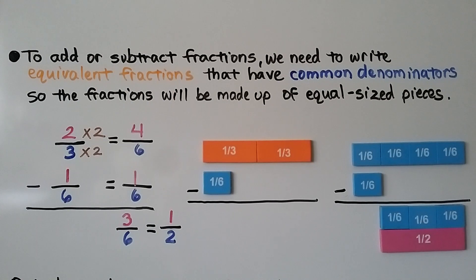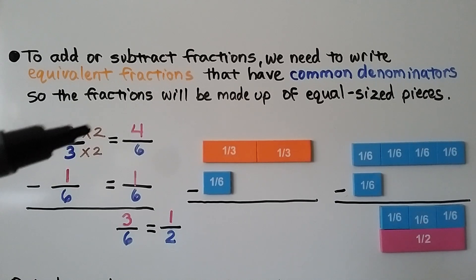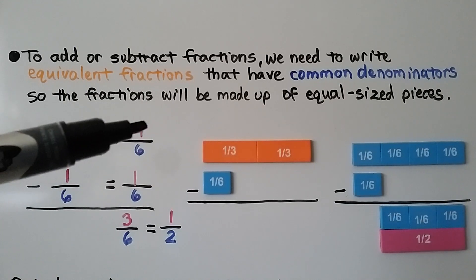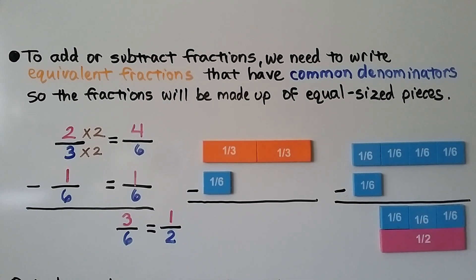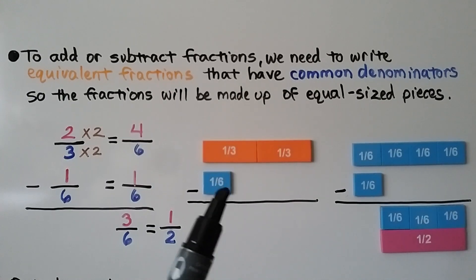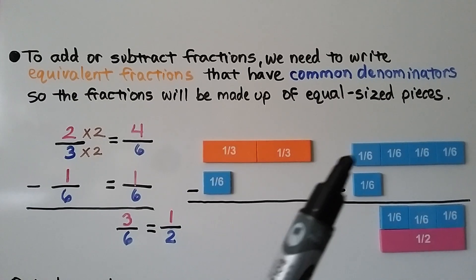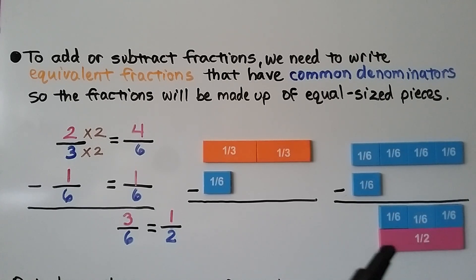To add or subtract fractions, we need to write equivalent fractions that have common denominators, so the fractions are made up of equal-sized pieces. If we have 2 thirds minus 1 sixth, we need to give them like denominators. 3 times 2 is 6, and 2 times 2 is 4 — so 2 thirds has an equivalent fraction of 4 sixths. Now we subtract: 4 minus 1 is 3, giving us 3 sixths, which simplifies to 1 half. We had 2 thirds, switched to 4 sixths, took 1 sixth away, and were left with 3 sixths, which equals 1 half.